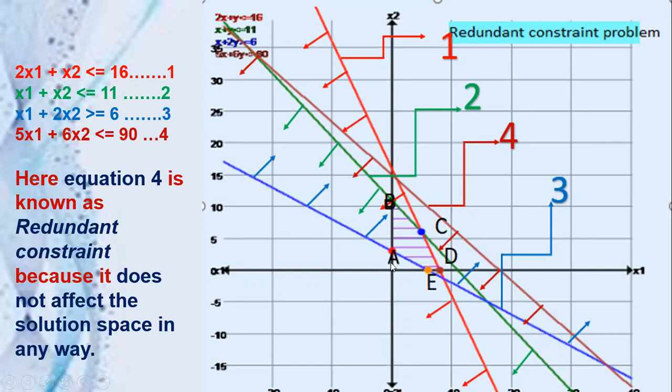My feasible region is above this blue line, below the red line, the green line, and the brown line. So my feasible region will be A, B, C, D, and E. This is my feasible region.